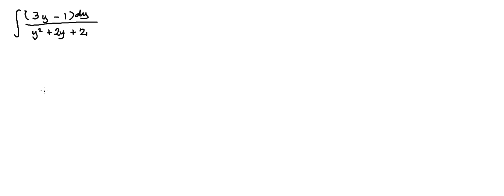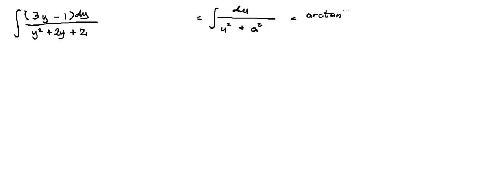Since we already discussed integration leading to inverse trigonometric functions, the nearest formula, looking at the denominator, is that we don't have the square root. So maybe we can use the second formula: the integral of du over u squared plus a squared, which leads to arctan of u over a, plus C.